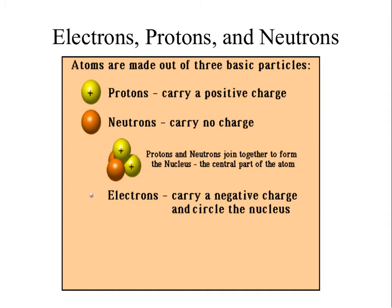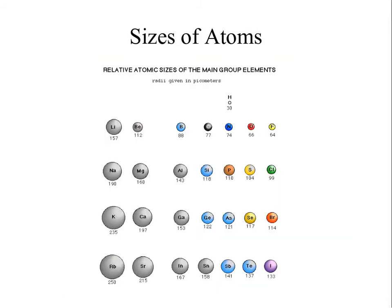Different numbers of protons and electrons mean that different types of atoms are of different size. Generally, the more protons and electrons they have, the larger they are.